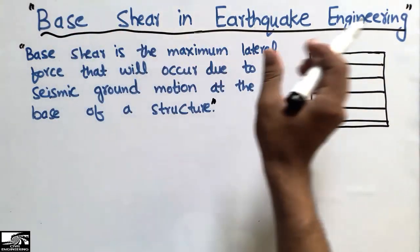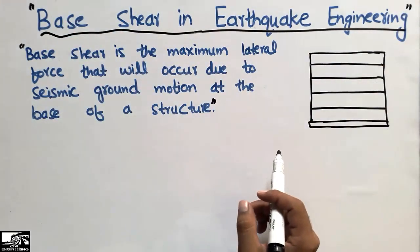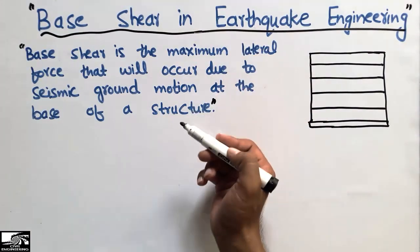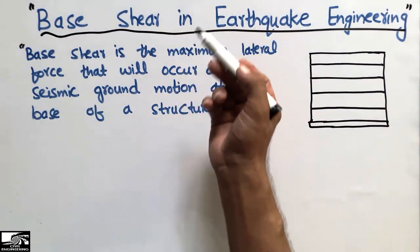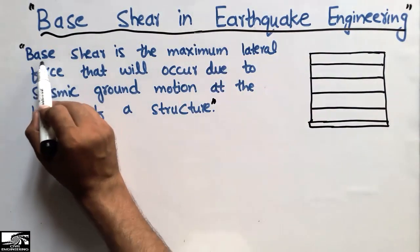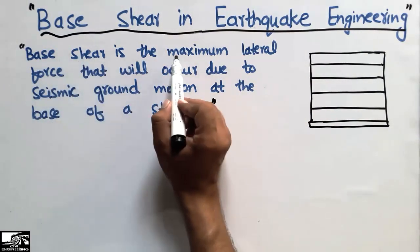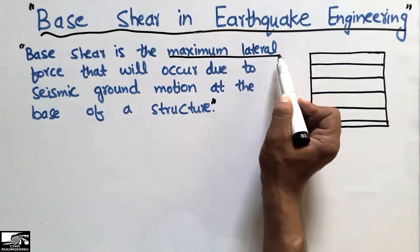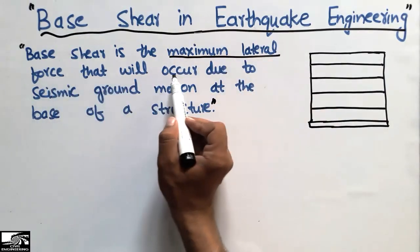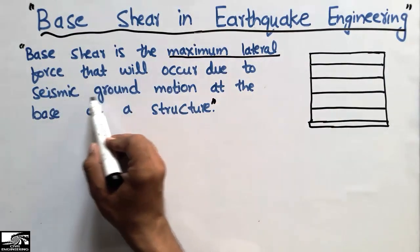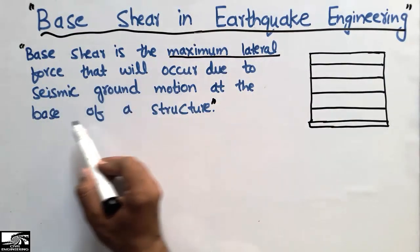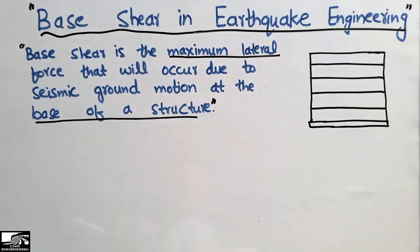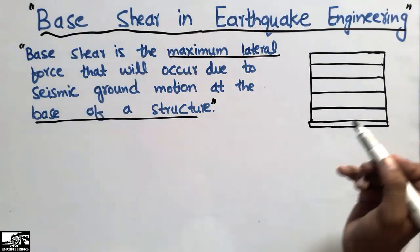We will be talking about the base shear concept and seismic engineering. The definition of base shear is that it is the maximum lateral — or sideways — force that will occur due to seismic ground motion, at the base of the structure.